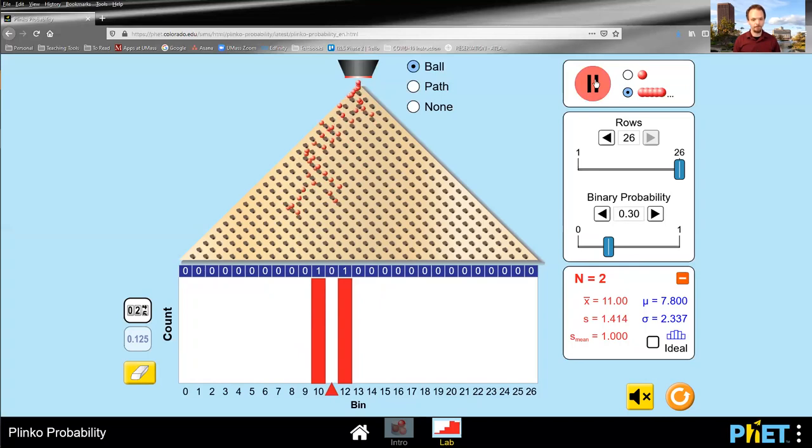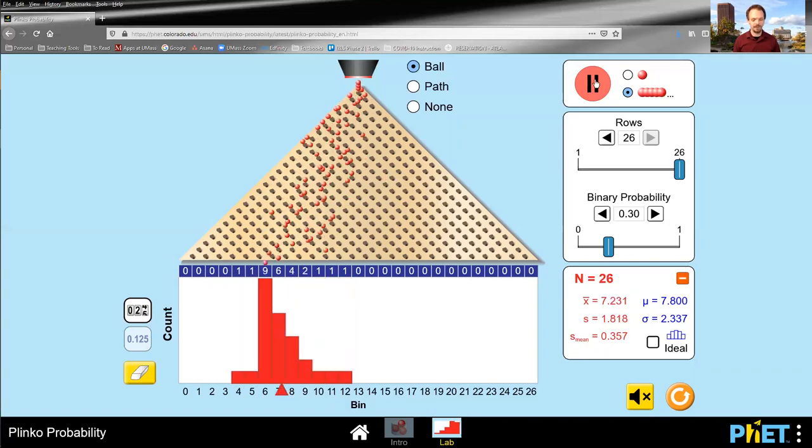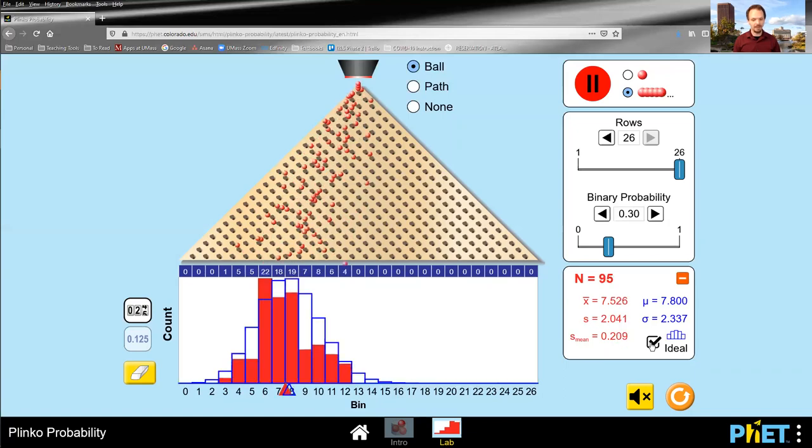Down they go. And first we get again a kind of random smatter. But as time progresses, lo and behold, once again, we begin to fill out the same bell curve. The only difference is that the bell curve is shifted to the left. So we don't need a 50-50 probability to get this to work. Just 30-60 probabilities over and over and over again will still fill out this bell curve.